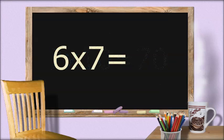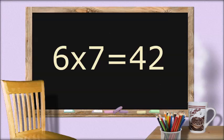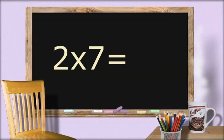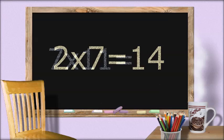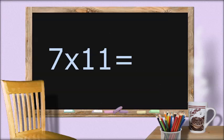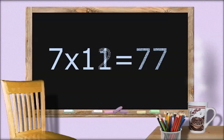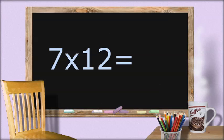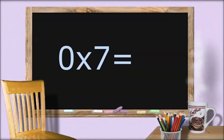6 times 7 equals 42. 2 times 7 equals 14. 7 times 11 equals 77. 7 times 12 equals 84. 0 times 7 equals 0.